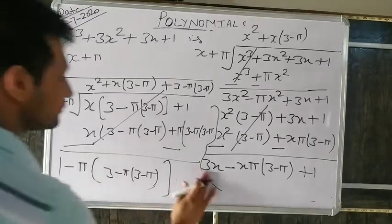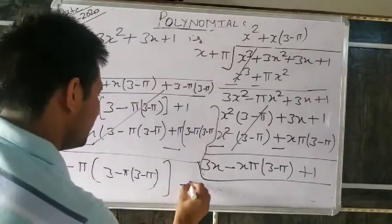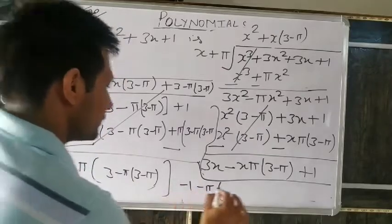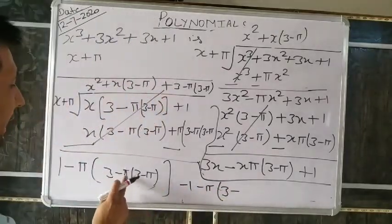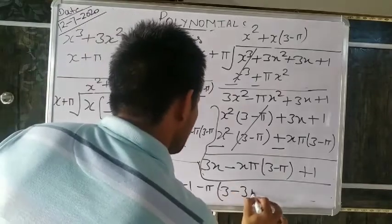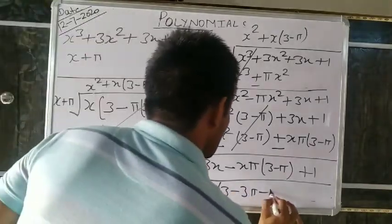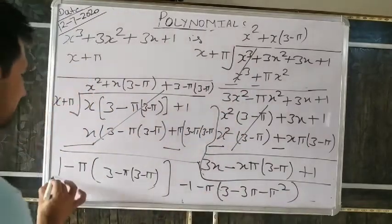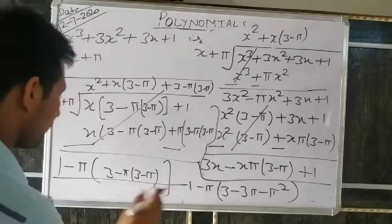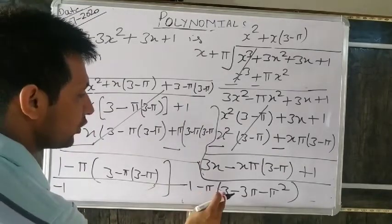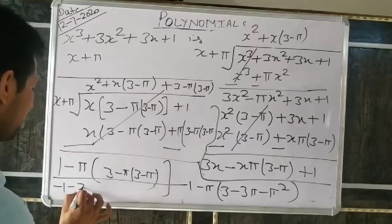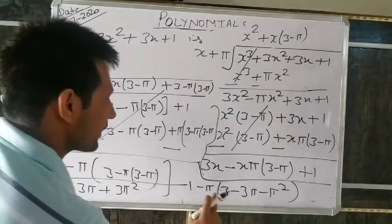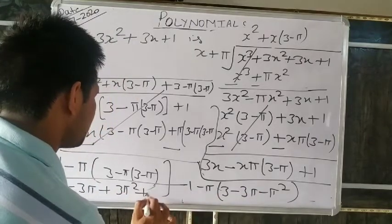How will you open it? Minus π(3−π)² — multiply out. So −π × bracket(3−π) squared. π is outside the bracket, so multiply it. What is minus 1 times? Negative into positive is negative: −3π. Negative into negative is positive: +3π². Negative into negative is positive: +π cube.